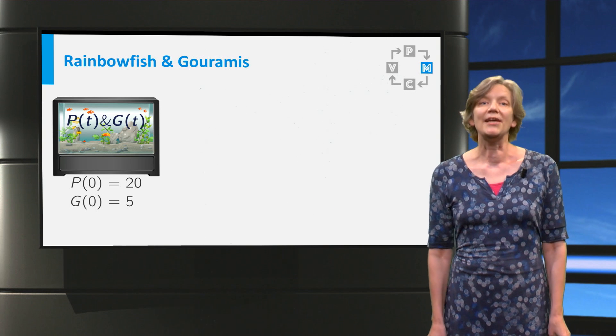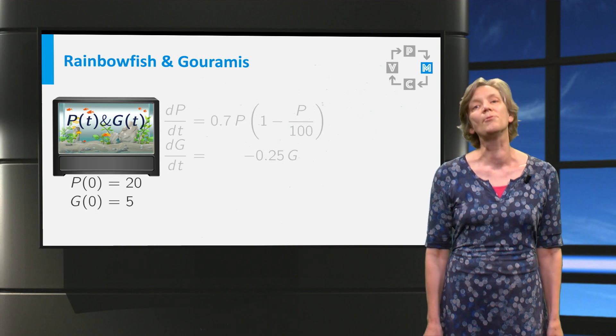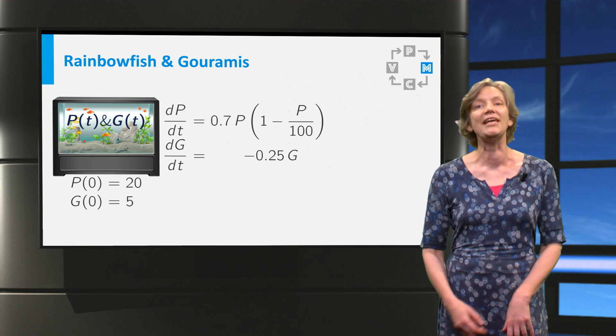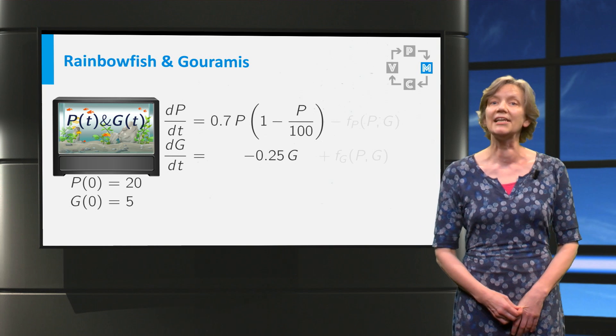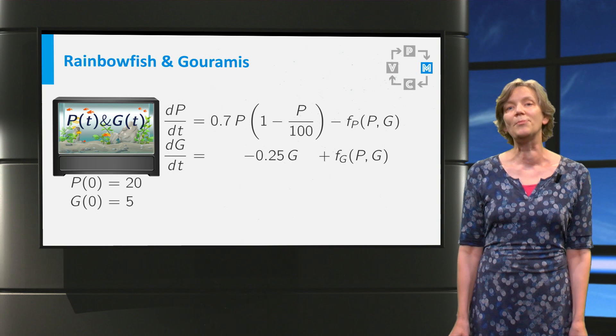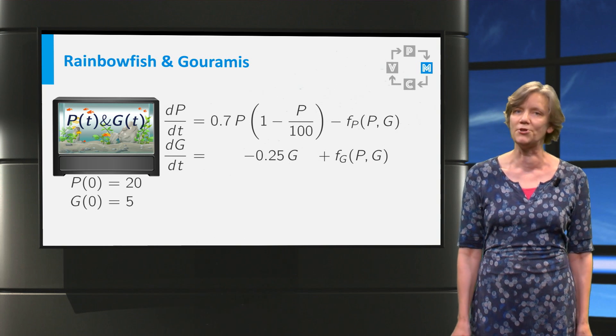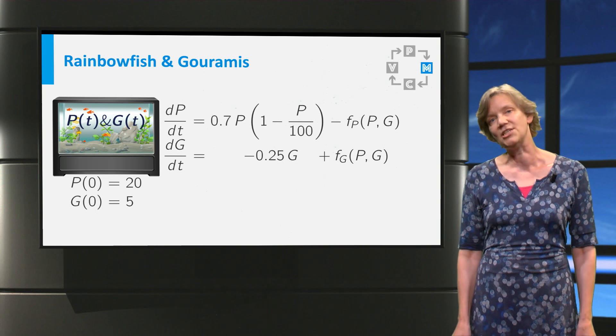Now we put the 5 gourami in the tank with the 20 rainbow fish. Here are the equations. The gouramis will eat the rainbow fish, so a negative term has to be included in the equation for P. The gourami population will benefit from eating the rainbow fish, so a positive term should be added to the equation for G.